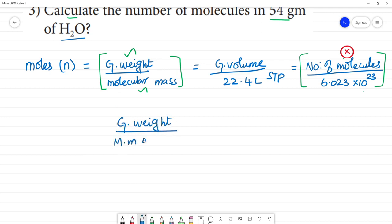To calculate the number of molecules, use the formula: number of moles equals number of molecules divided by Avogadro number, 6.023 into 10 to the power 23. So first, calculate molecular mass of water.